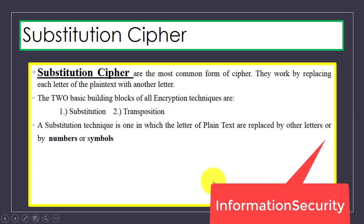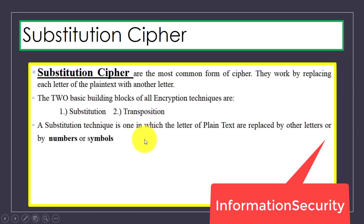What is substitution cipher? Substitution ciphers are the most common form of cipher. In substitution cipher, we replace each letter of the plain text with another letter. We have two basic blocks of all encryption techniques: substitution and transposition. In the case of substitution cipher, letters of the plain text are replaced by other letters.